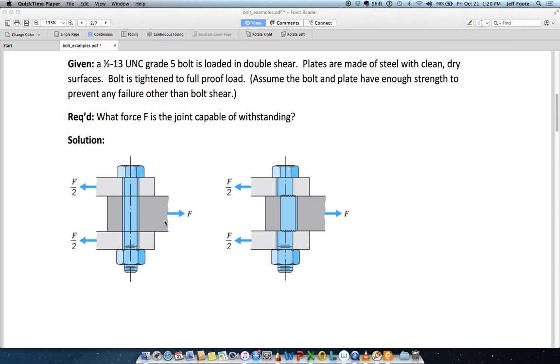Plates are steel with clean, dry surfaces. We're going to need that to calculate a friction coefficient, or rather look up a friction coefficient. Now the bolt is tightened to full proof strength. That's not a bad assumption in this case, because this bolt - the only tensile load in the bolt is the actual tightening load Fi.